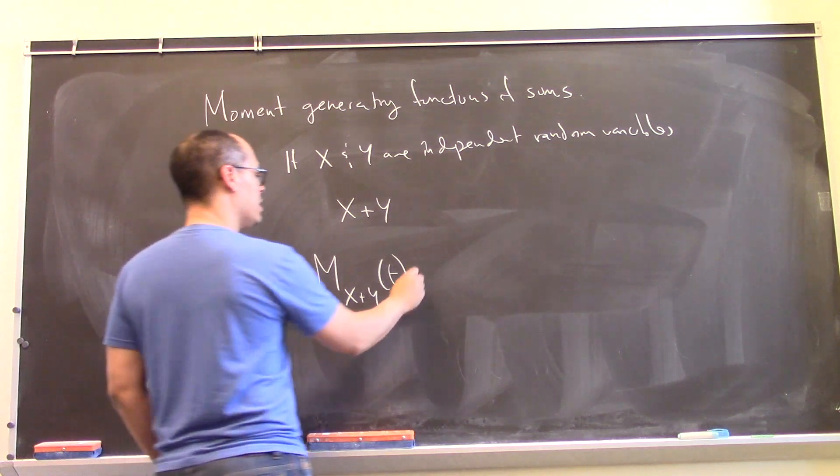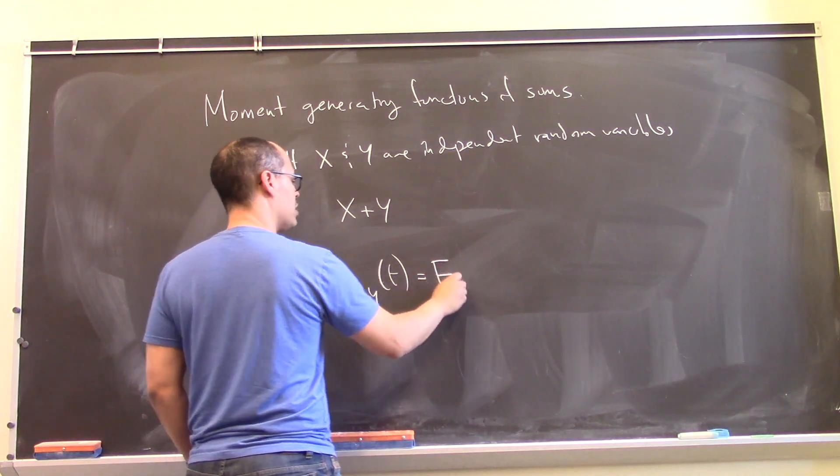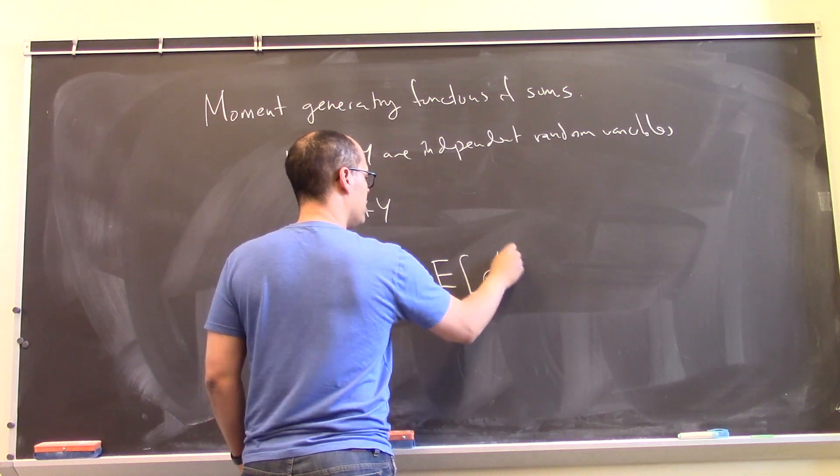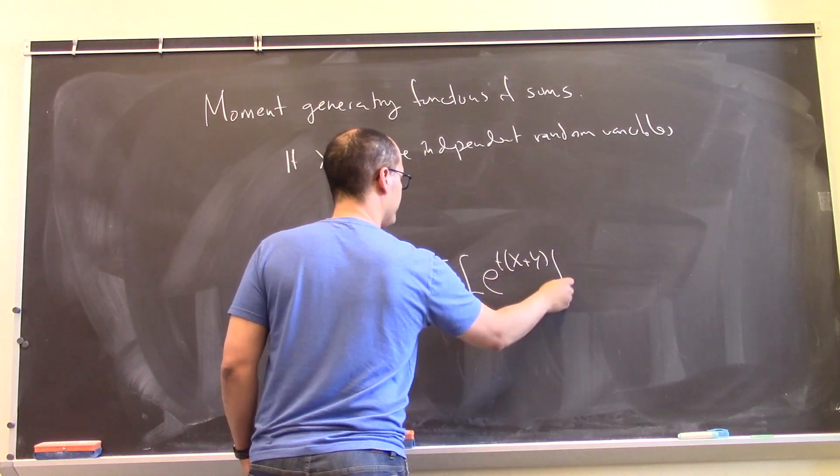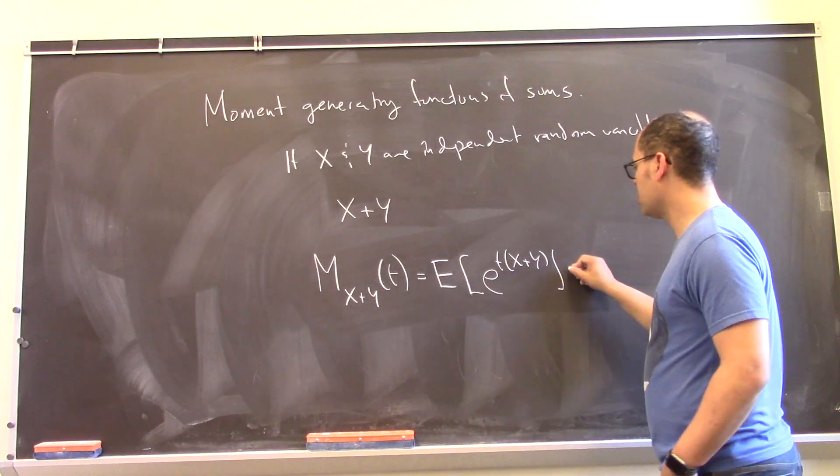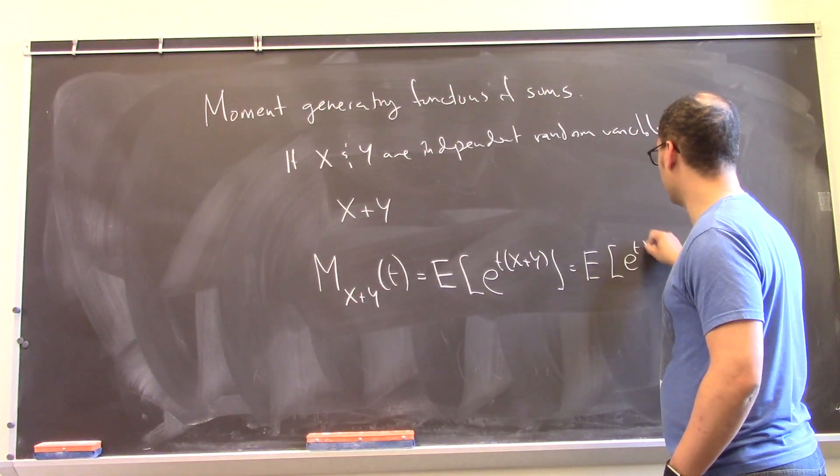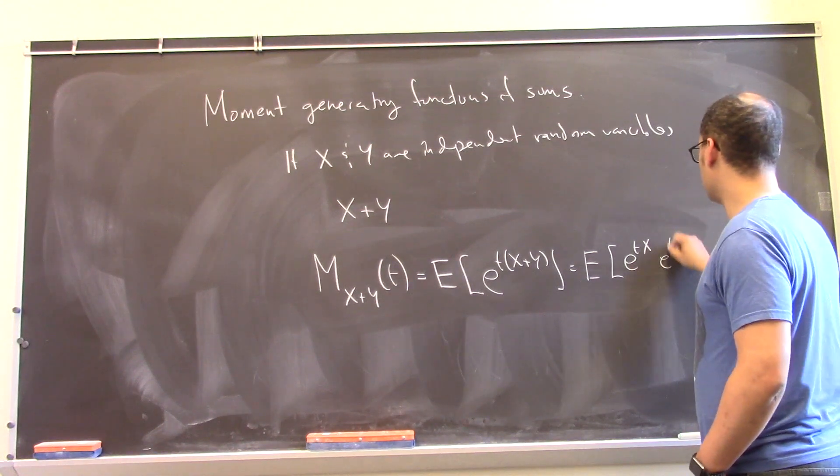Well, by definition, this is the expected value of e to the t x plus y. And that is the expected value of e to the t x times e to the t y.